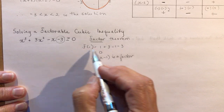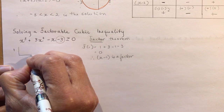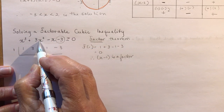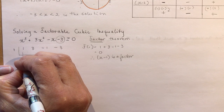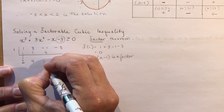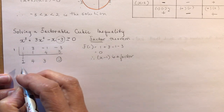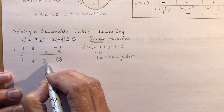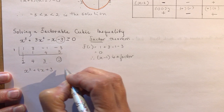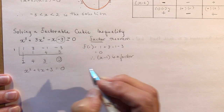Now I need to reduce this to a quadratic, so I'll use synthetic division with root 1. Writing the coefficients and the constant, I bring down the 1, multiply and add through, giving me zero remainder. This yields the quadratic x² + 4x + 3 = 0. Factoring: multiplies to 3 and adds to 4 gives 3 and 1, so (x + 1)(x + 3) = 0.